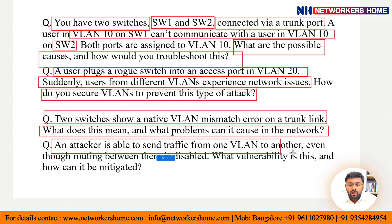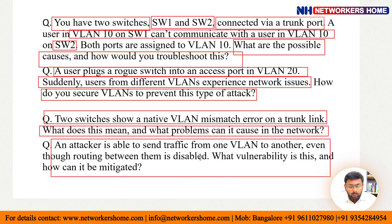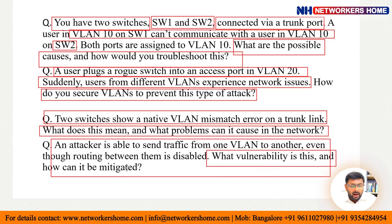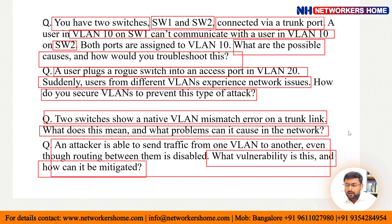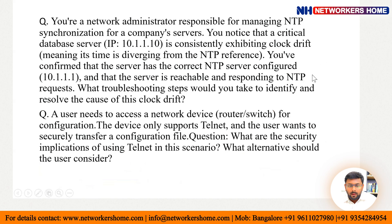Next question: an attacker is able to send traffic from one VLAN to another even though routing between them is disabled. The routing has been disabled between one VLAN to another VLAN, but the attacker is still able to send traffic. What vulnerability is this and how can it be mitigated? This is also one real scenario-based question.